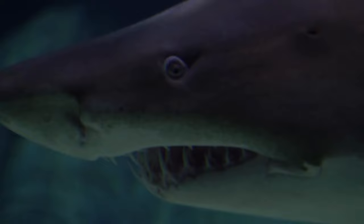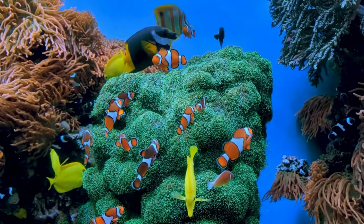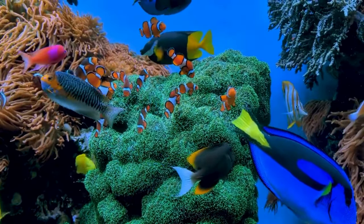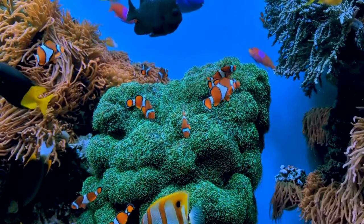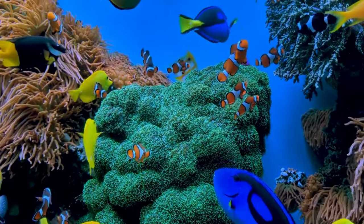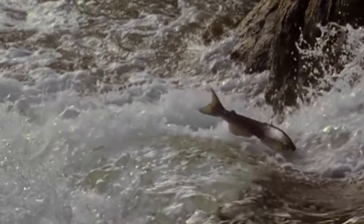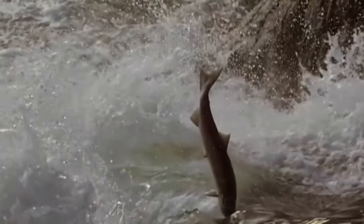Furthermore, saltwater fish have developed complex visual systems, often boasting vibrant colors and intricate patterns. These striking visual displays serve multiple purposes, including communication, attracting mates, and camouflaging within coral reefs or open water. Some saltwater fish undertake extraordinary migrations, traversing great distances to spawn in specific locations — for instance, the Pacific salmon journeys from the ocean to the freshwater rivers where it was born, enduring treacherous obstacles to complete its life cycle.